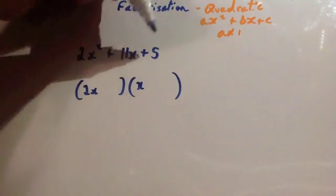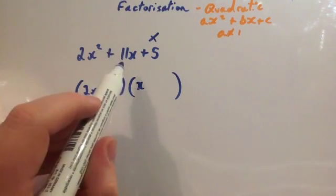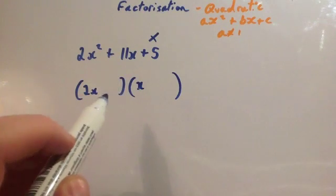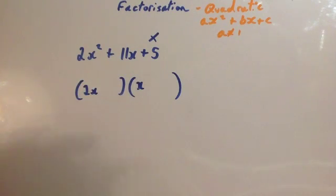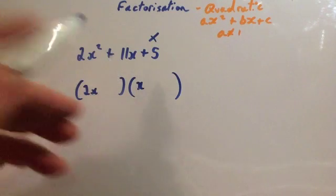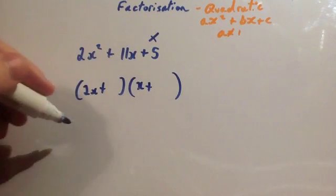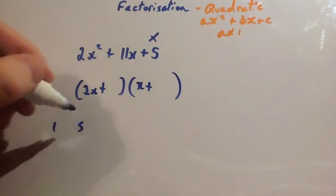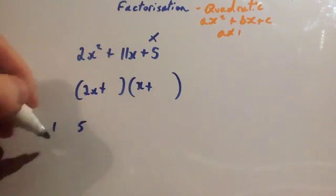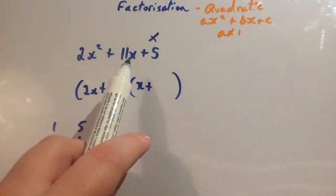The two numbers on the end will times together to give you 5, but they won't simply add together to give you 11x — you're going to have to use trial and improvement. As you become much better at these you'll be able to spot it straight away. Because you've got a plus sign, it's very likely they're going to be two positives. So times together to give you 5: you've got 1 and 5. It's important which way around you put these.